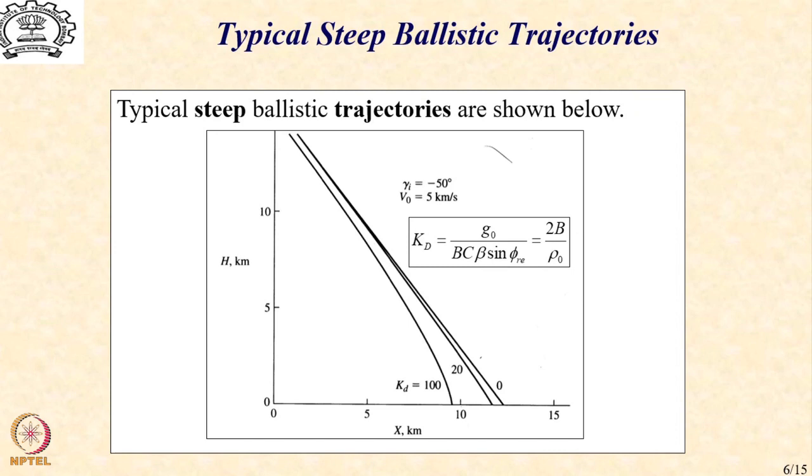That as kd value increases that is the ballistic coefficient decreases which indirectly means that either weight decreases or the drag coefficient increases. There is a little bit of curving of the trajectory as we reach the lower part of the atmosphere which is much denser and as it is much denser the effect of drag increases significantly indicating that some amount of curving of the trajectory is possible.